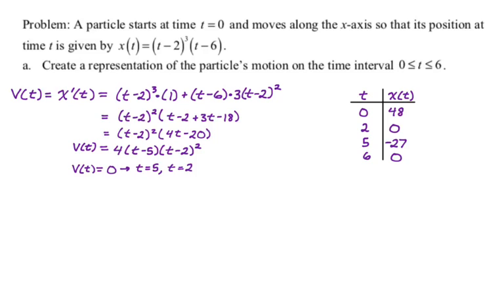All right. So now we set up our axis. So this is position, this is like an x axis. And all I really need to put on it are zero, 48, and negative 27, the values that came out of the table.